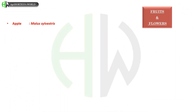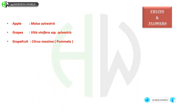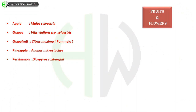Apple – Malus sylvestris. Grapes – Vitis vinifera subspecies sylvestris. Grapefruit – Citrus maxima, that is pomelo. Pineapple – Ananas microstachys. Persimmon – Diospyros roxburghii. Pomegranate – Punica protopunica, which is the wild species.